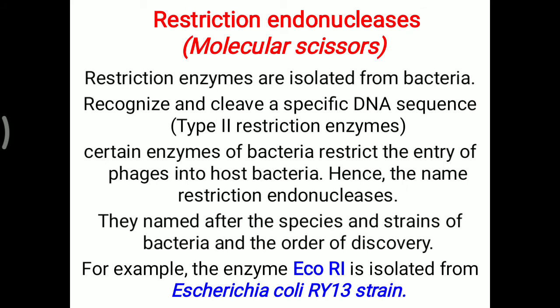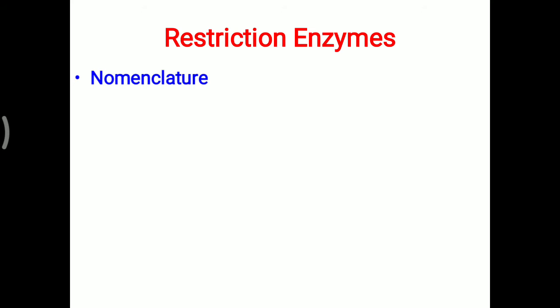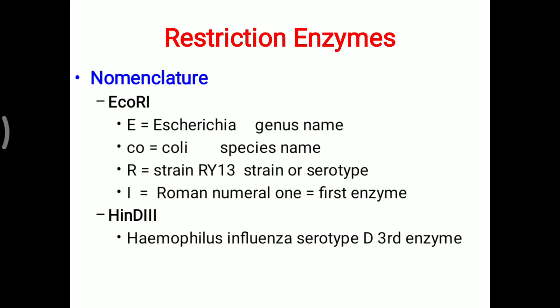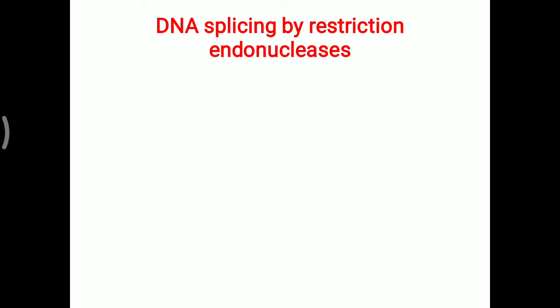For example, the enzyme EcoRI is isolated from Escherichia coli RY13 strain: 'E' means Escherichia (genus), 'co' means coli (species), 'R' means the RY13 strain or serotype, and 'I' is the Roman numeral for the first enzyme of that serotype. Similarly, HindIII indicates Haemophilus influenzae serotype d, third enzyme. This is the nomenclature for restriction enzymes.